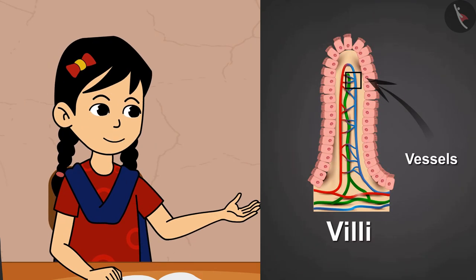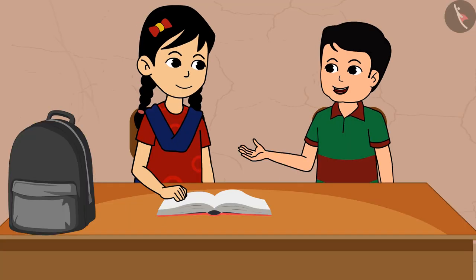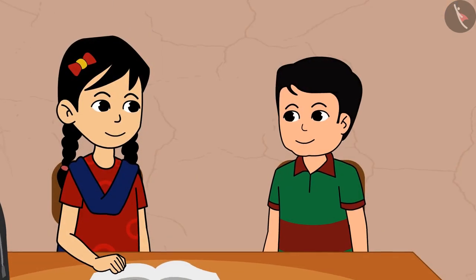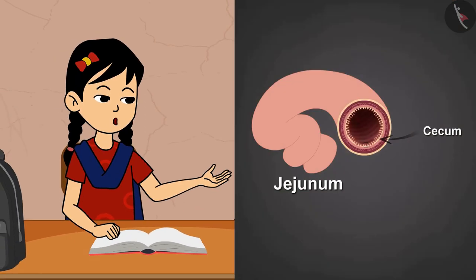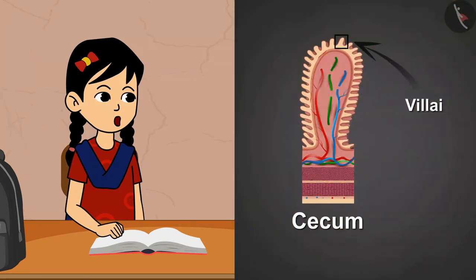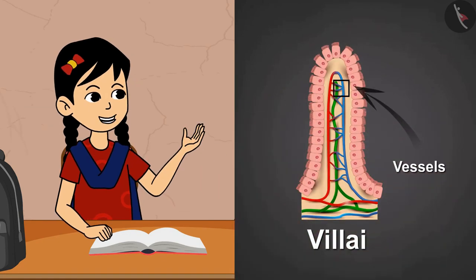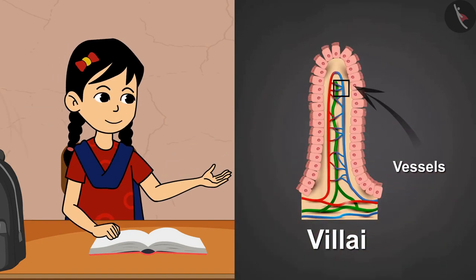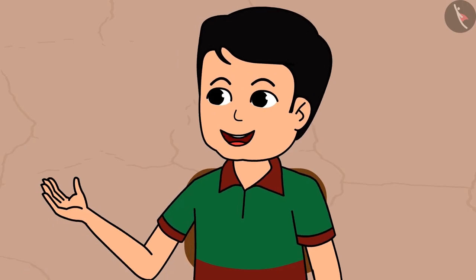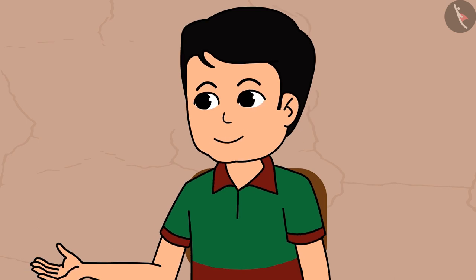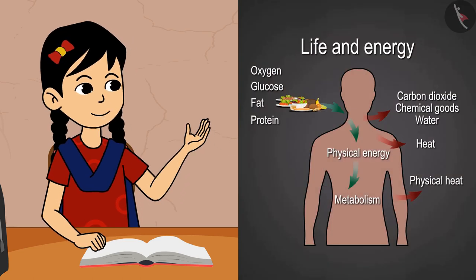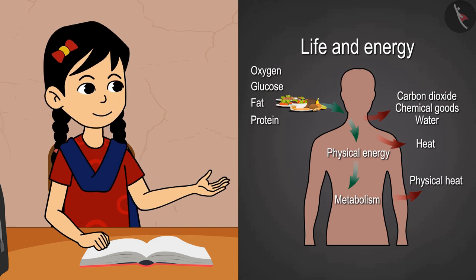These are called villi. These finger-like projections increase the surface area for digestion and absorption. The absorbed substances are transported via blood vessels to the different organs of the body. In the cells, glucose breaks down with the help of oxygen into carbon dioxide and water, and energy is released.